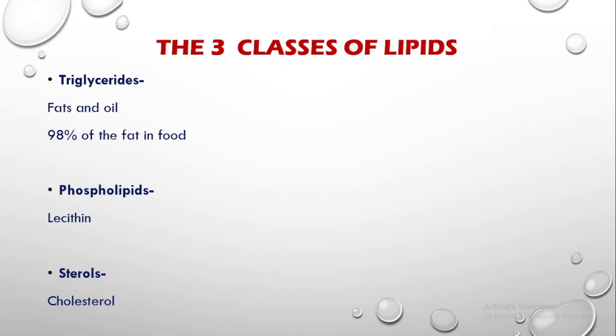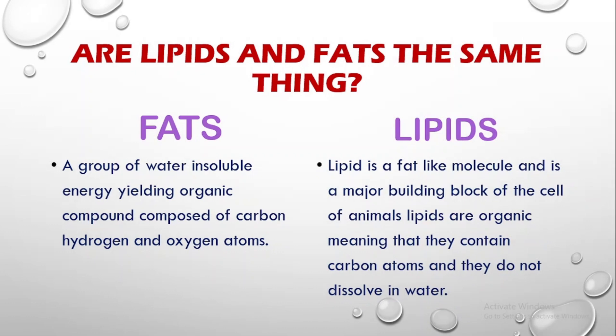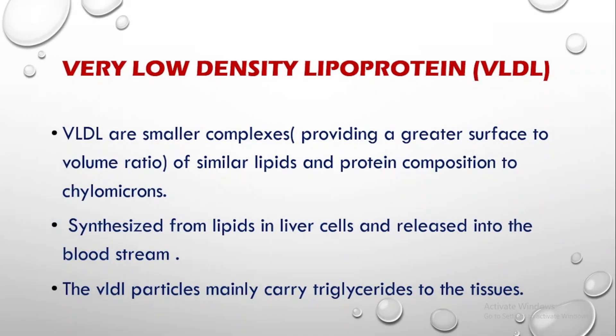Moving to lipids: the three classes of lipids are triglycerides, phospholipids, and sterols. Triglycerides are fats and oils, phospholipids include lecithin, and sterols include for example cholesterol. Is there any difference between fats and lipids? Fats are a group of water-insoluble, energy-giving organic compounds composed of carbon, hydrogen, and oxygen atoms. Lipids are fat-like molecules and a major building block of animal cells, also made up of carbon atoms and insoluble in water.